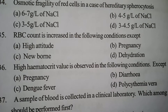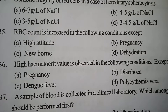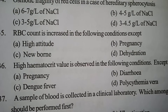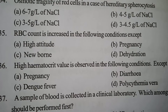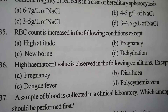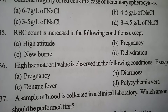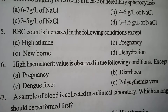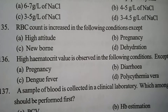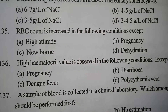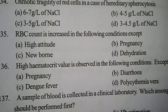Next one. High hematocrit value is observed in the following conditions — except. Option A: Pregnancy. Option B: Diarrhea. Option C: Dengue fever. Option D: Polycythemia vera. Correct answer: Option A — Pregnancy. In case of pregnancy, PCV value is low. In all other three cases, PCV value is increased.